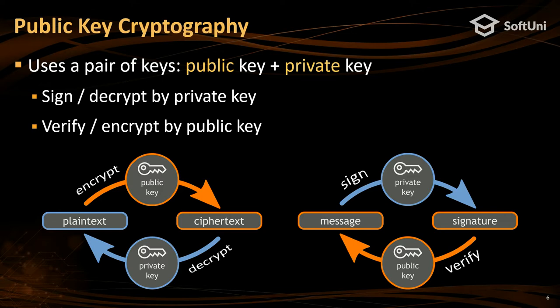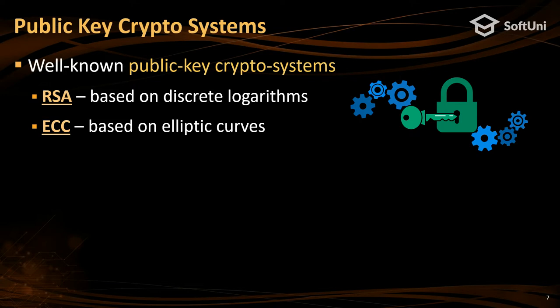In encryption you can encrypt either by public key or by private key, and you always decrypt with the opposite key. When you sign messages you always use your private key, which is stored in your wallet or hardware device, and you can verify the signature with the public key. Usually this public key comes along with or can be derived from the signed message. These are the basic concepts you need to know if you use blockchain or have a wallet.